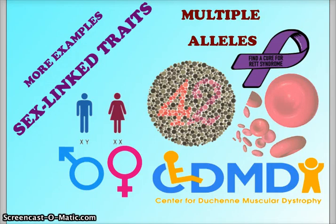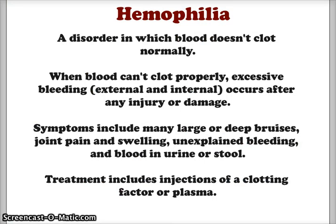Let's continue with our work in Mendelian genetics and heredity and look at some more examples of sex-linked traits and how to use the Punnett square to figure out possible outcomes of offspring. We're going to look first at hemophilia, which is a disorder in which the blood does not clot properly.